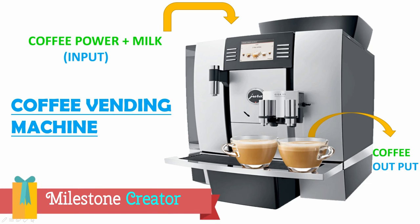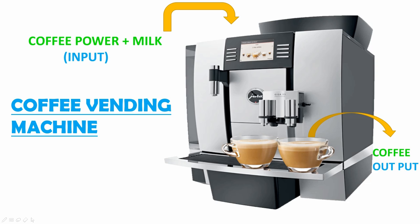This is our coffee vending machine, with the help of which we make coffee. So in this coffee vending machine, first what do we do? We give input — coffee powder with milk. We give coffee powder and milk as input into the machine. So finally, what output do we get? Coffee. So between the input we are giving and the output we are getting, what process is happening in between that finally gives us coffee as output? That process is not visible to us — so this is what we call a black box.